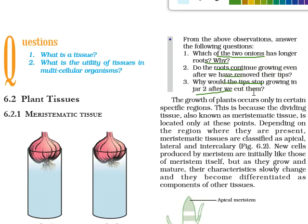So in this way we understand the importance of meristematic tissue for growth. The jar one onion grew well because growth depends on meristematic tissue. This is how we conclude our activity. Please like, share, and subscribe to our channel, and do leave a comment. Thank you!